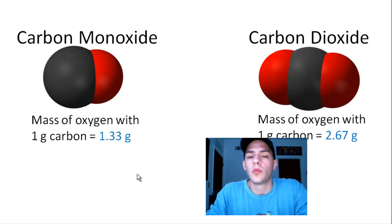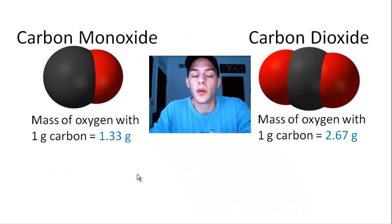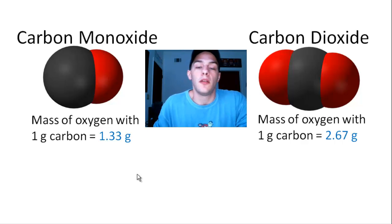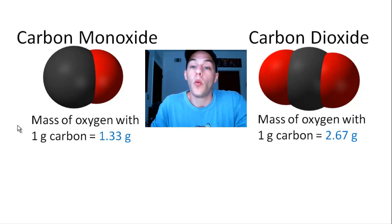So let's move on to a real example. So here we have two compounds, carbon monoxide and carbon dioxide. Both of these are composed of the same two elements, carbon and oxygen. Carbon monoxide has a carbon and one oxygen. Carbon dioxide has a carbon and two oxygens. And if we keep the mass of carbon in both of these cases, if we fix that at one gram, then the mass of oxygen in carbon monoxide is going to be 1.33 grams, and the mass of oxygen in carbon dioxide is going to be 2.67 grams.